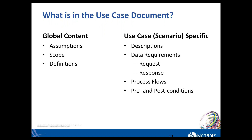If you've had a chance to look through the document, you've seen that there is global content — our assumptions, scope, definitions, and who the actors or participants are. Our definitions are generally all existing NCPDP or industry definitions, though we do have some new elements and definitions we are proposing. Within each use case, you will see descriptions, the data requirements for the request and the response, the process flows, and the pre and post conditions.